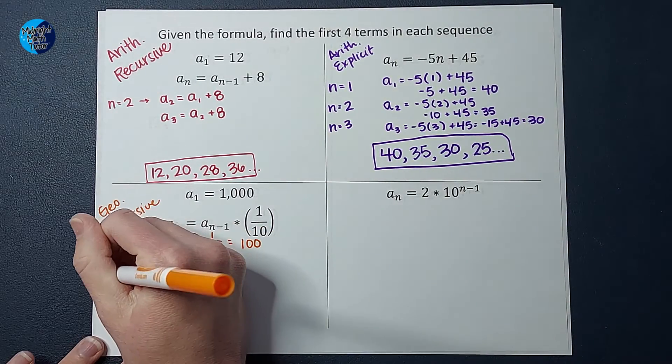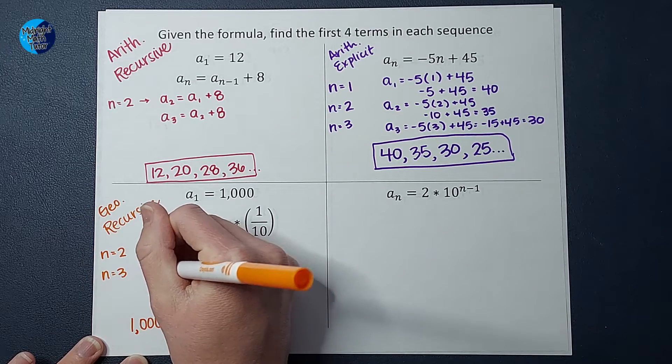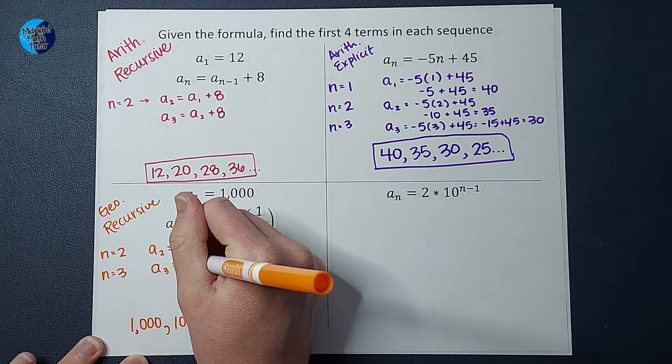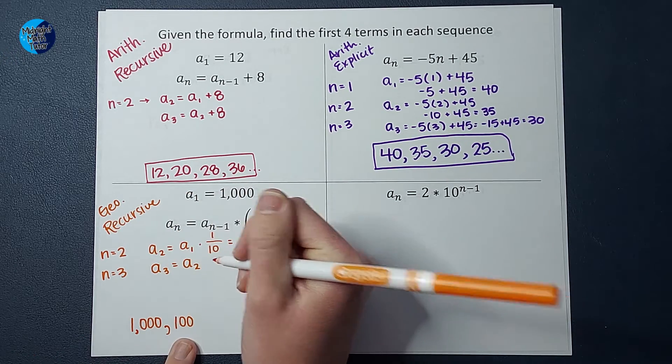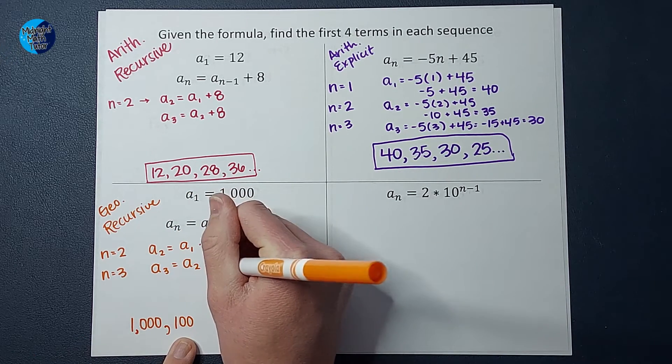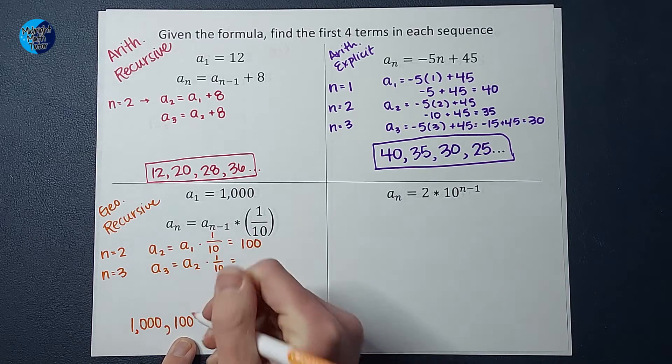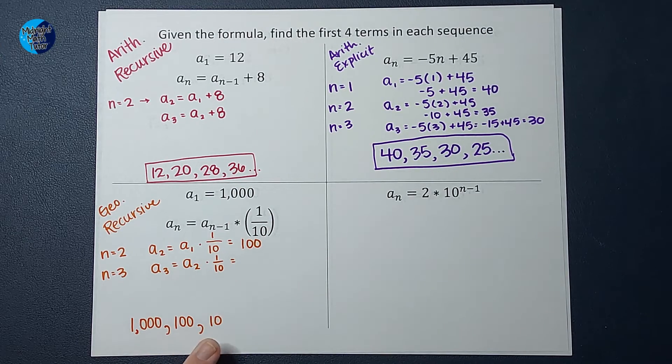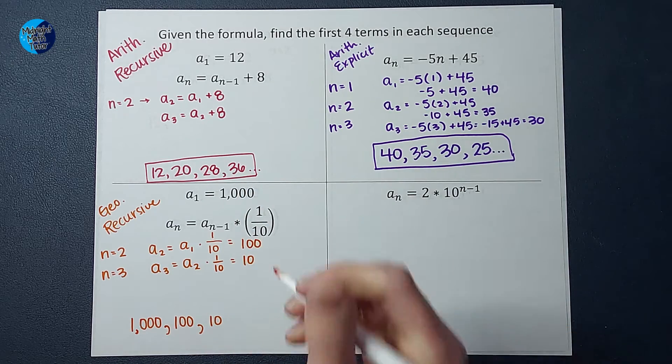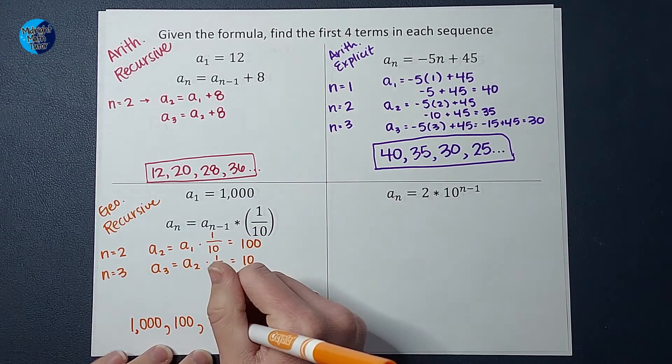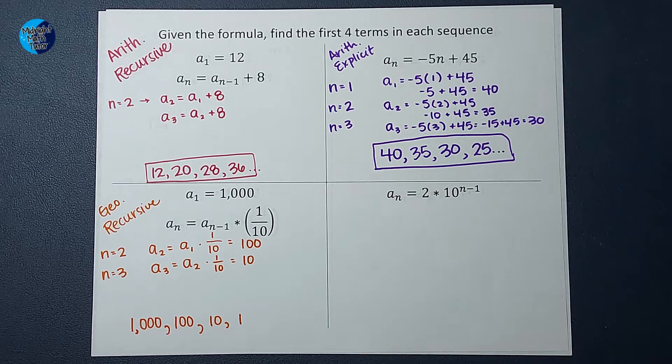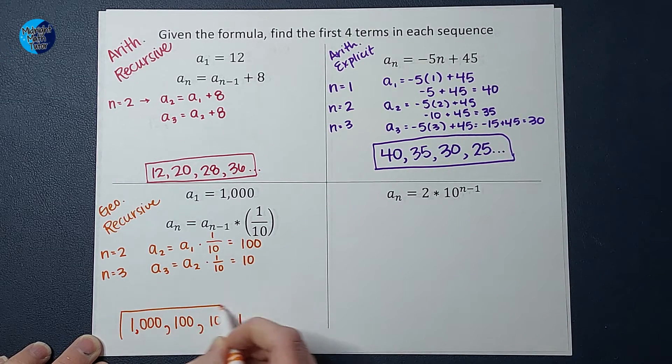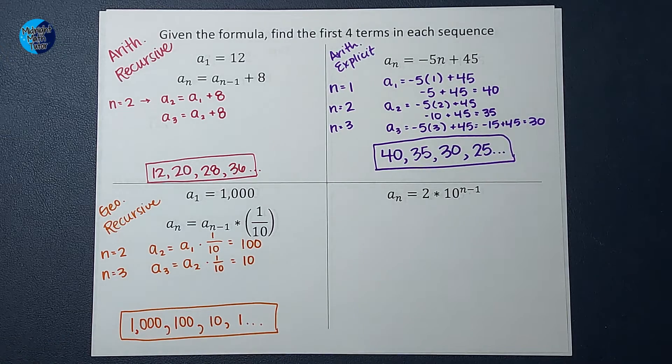Now, I could plug in n equals 3, although you might already know what it's going to be. So 3 minus 1 is going to give me a sub 2. So take a sub 2 and times it by 1 tenth or divide it by 10. And what is that going to give me? That's going to give me 10. And then if I were to divide that by 10, I would get 1. And it would keep going. There's the first four terms in that sequence.